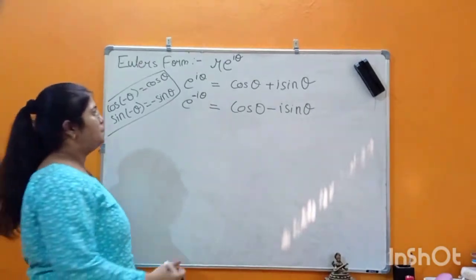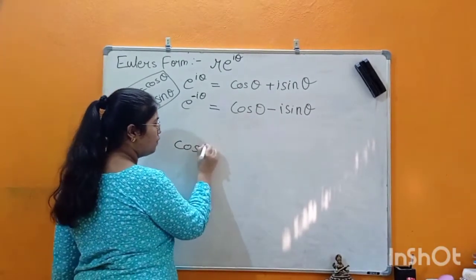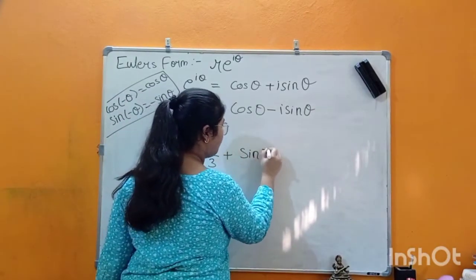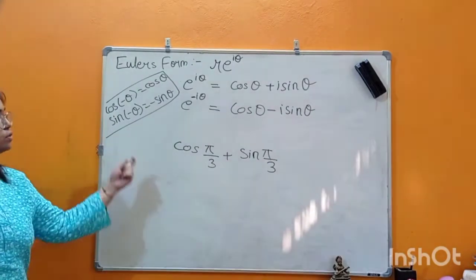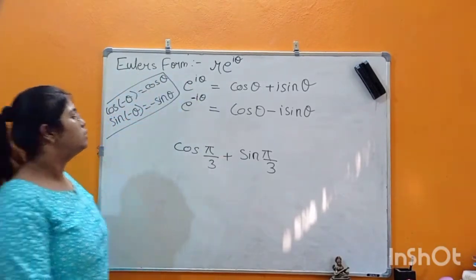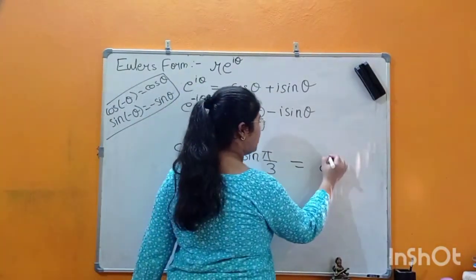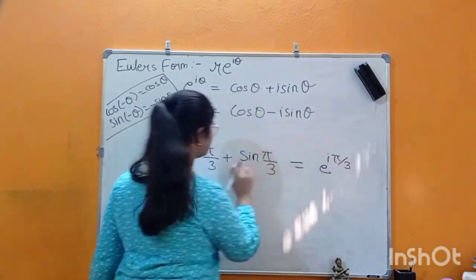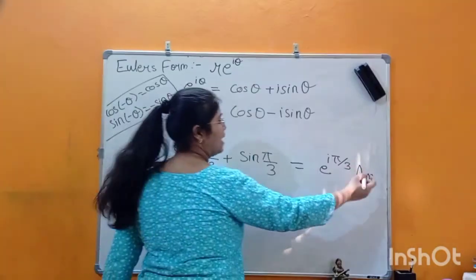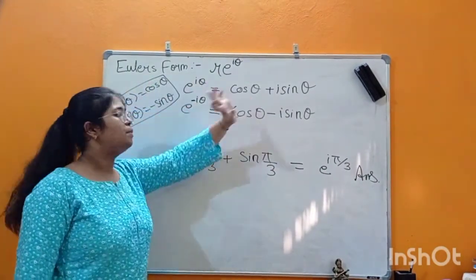Let's solve with the help of an example. Suppose we are given cos(π/3) + i·sin(π/3), and we are asked to represent this in Euler's Form. Since the value of r is 1 here, we simply write it as e^(iθ). The value of θ is π/3, so the answer is e^(iπ/3). That is your Euler's Form representation.